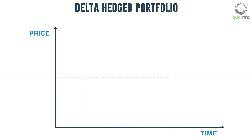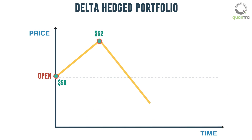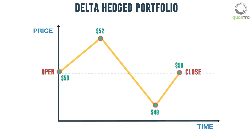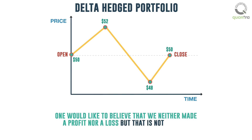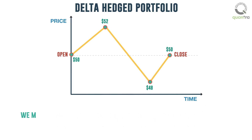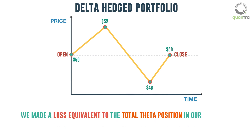But what if the stock opens at $50, increases or decreases to either $52 or $48, and before the market closes, goes back to $50? One would like to believe that we have neither made a profit nor a loss. But that is not the case — we have made a loss equivalent to the total Theta position in our portfolio.